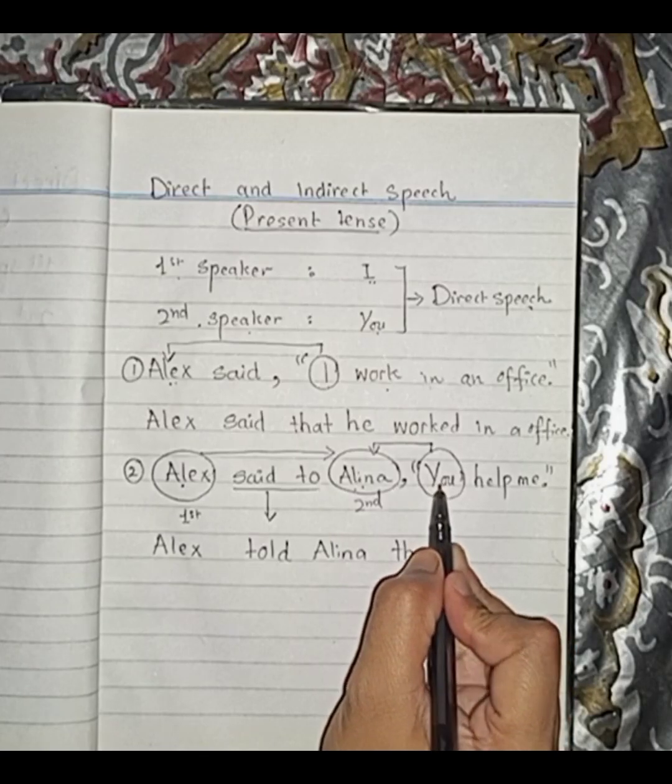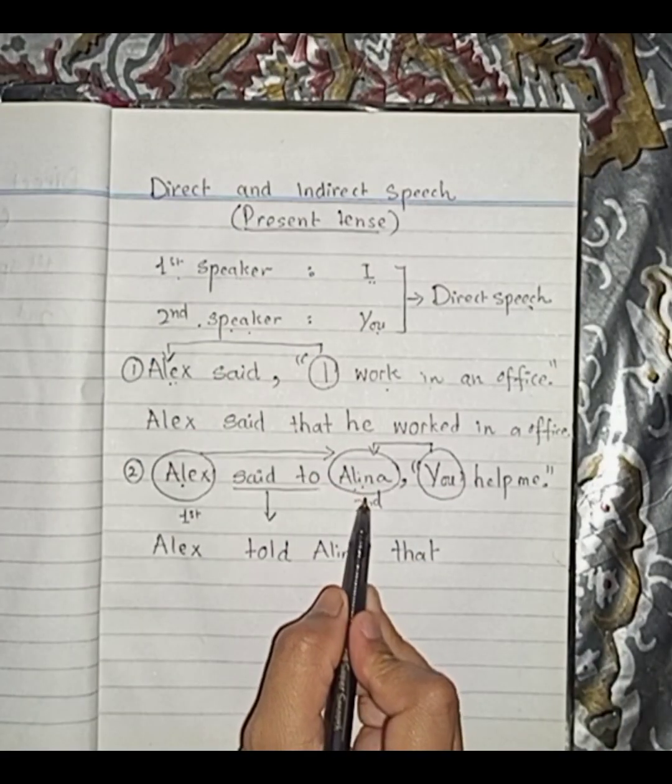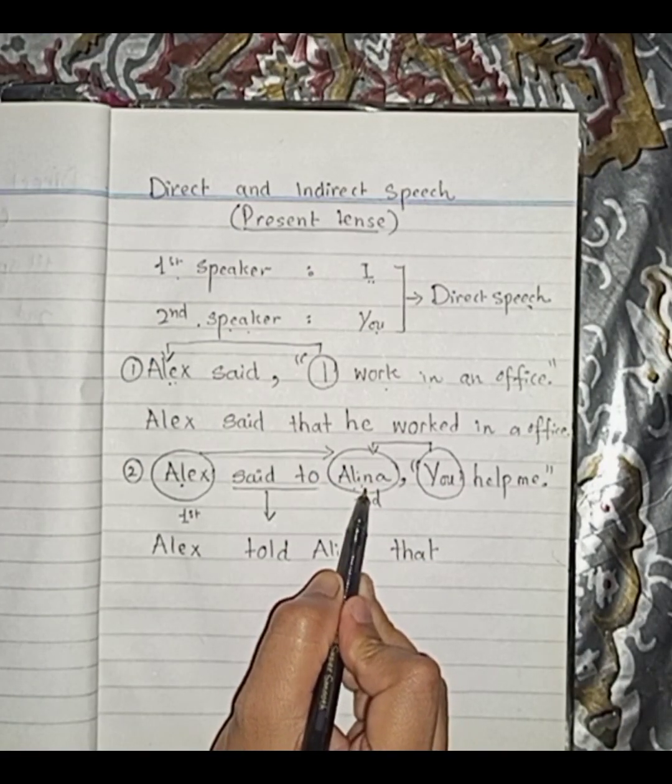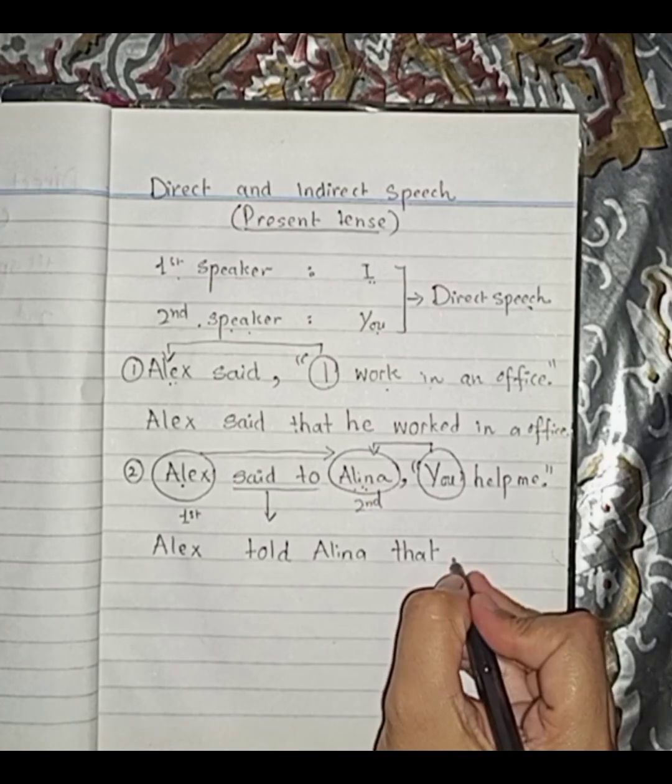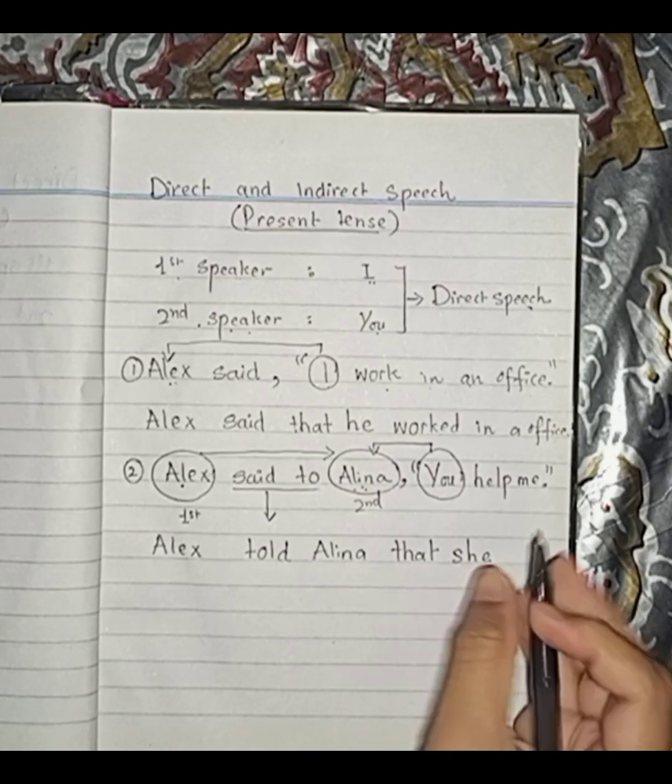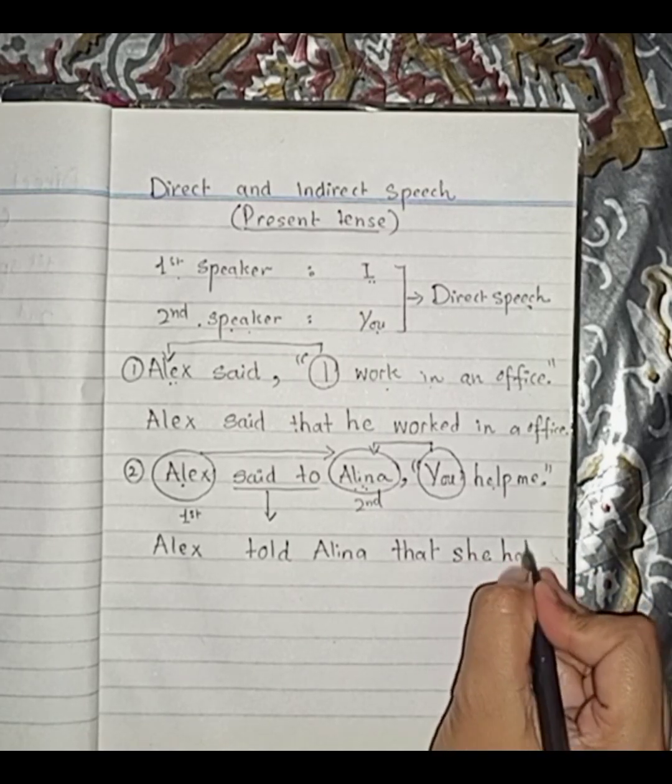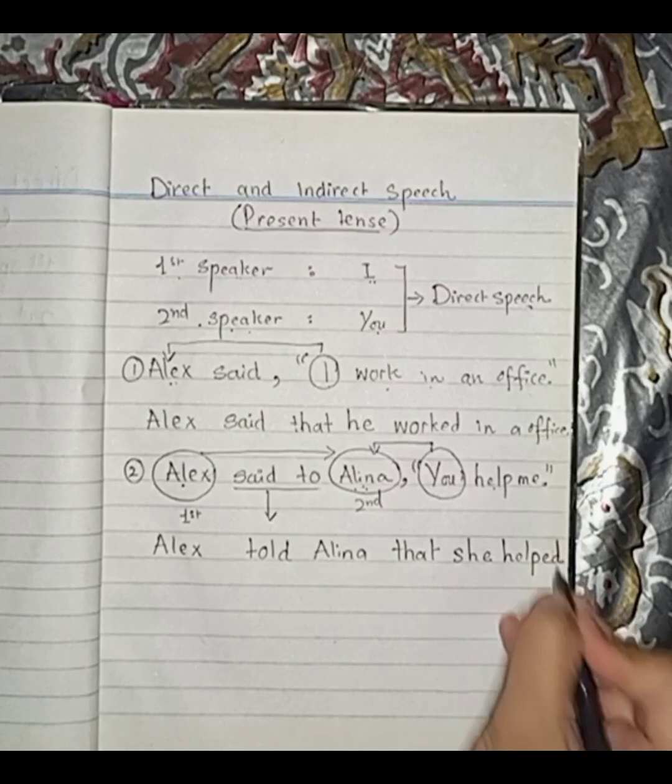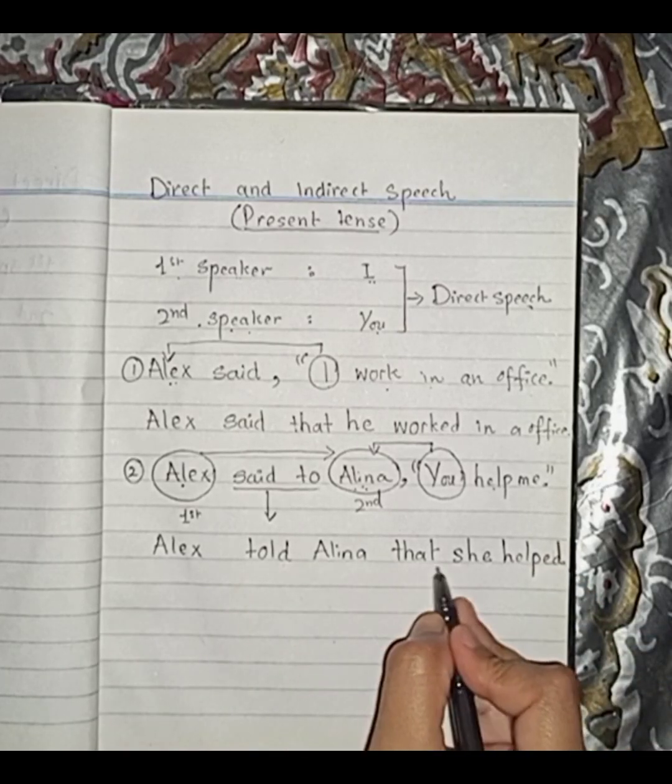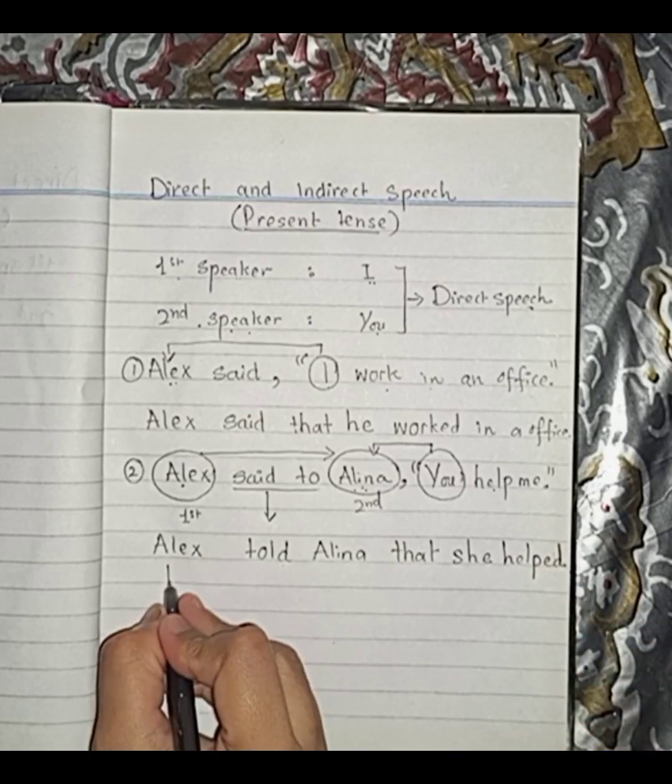I told you that you is always for the second speaker. And here the second speaker is Alina. And Alina's gender is female. And of course for female we use she. She. And now let's change this into past tense. So this help will be converted into helped. Alex told Alina that she helped him.